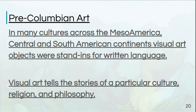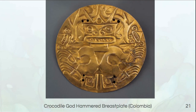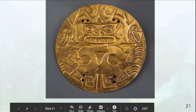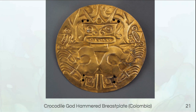Now we're going to move on and talk about pre-Columbian art. There were lots of cultures across Mesoamerica, Central and South America that created beautiful visual art objects, and these were often stand-ins for written language. Visual art tells the story of a particular culture, religion, and philosophy. Here we have a beautiful breastplate from Colombia — a crocodile god hammered breastplate. You can see it's incredibly detailed, very rich and sumptuous looking. This gold is absolutely breathtaking; it illuminates the crocodile god in the center. It's very stylized, which was common for this type of artifact.